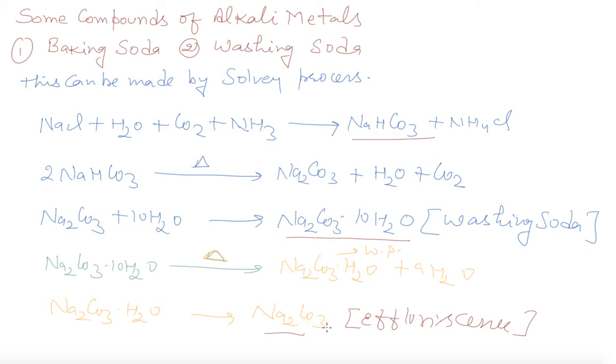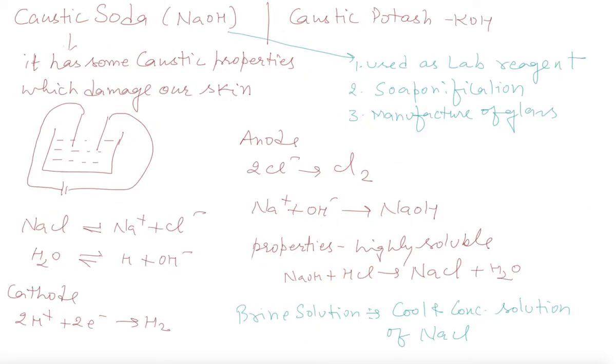The next compound is caustic soda NaOH. It is called caustic soda because it has caustic properties which damage our skin. Caustic potash is KOH. You will get it by electrolysis of NaCl with water. NaCl breaks down to give Na+ and Cl-. Water gives H+ and OH-.